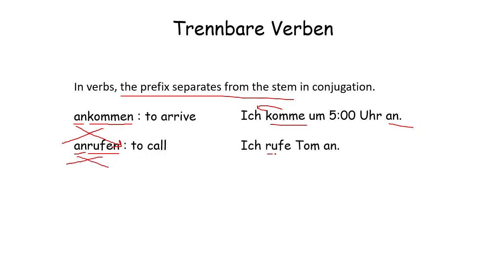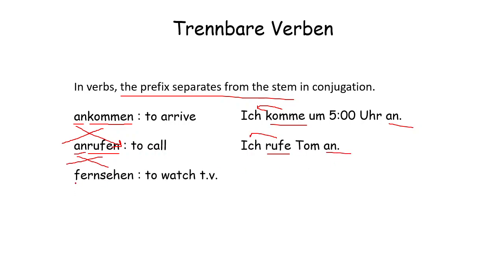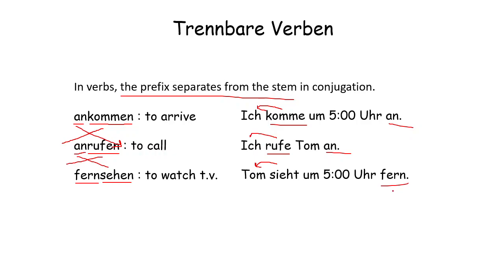'Ich rufe an' — 'rufen' conjugates with the subject and 'an' goes at the end. Fernsehen means 'to watch television'. So 'sehen' goes at second position and 'fern' goes at the end. For example: 'Tom sieht fern' — 'sehen' conjugates with 'Tom', and 'fern' goes at the end.